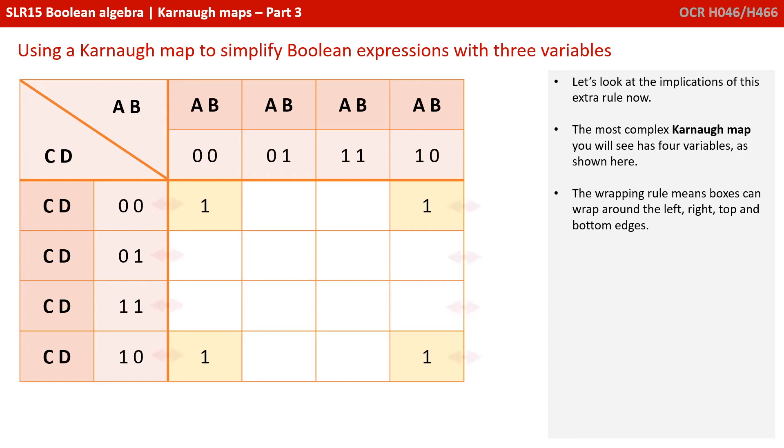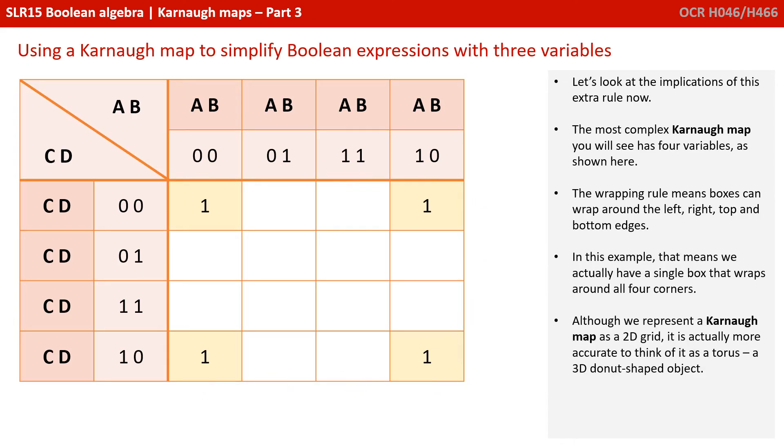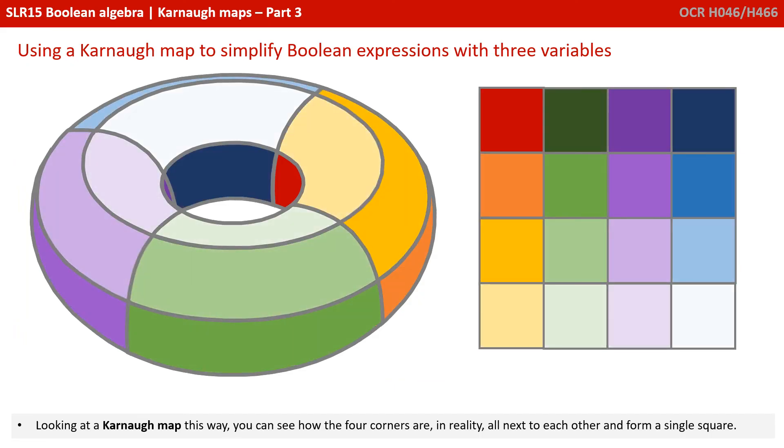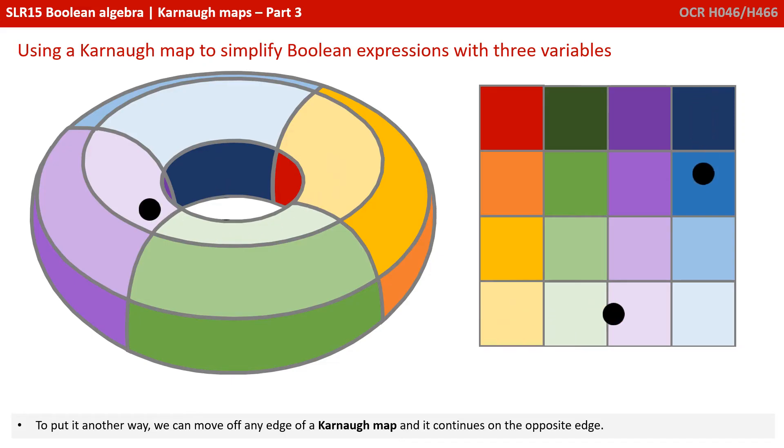Now let's take a quick pause and look at the implications of this extra rule. The most complex Karnaugh map you will see has four variables, and we'll look at that in the next video. The wrapping rule means boxes can wrap around the left, right, top and bottom edges of a map. In this example, that means this is actually a single box that wraps around all four corners. So although we represent a Karnaugh map as a 2D flat grid, it's actually more accurate to think of it as a torus, a 3D donut shaped object. So looking at the Karnaugh map in this way, you can see how the four corners are in reality all next to each other and form a single square. To put it another way, we can move off any edge of a Karnaugh map and it continues on the opposite edge.